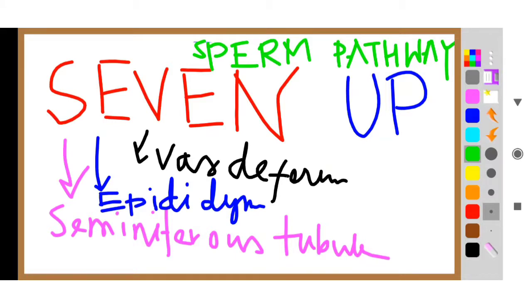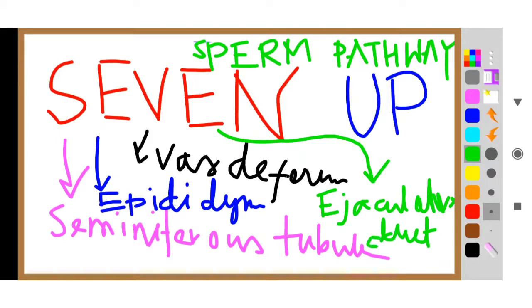E means ejaculatory duct. Ejaculatory duct. Okay, sorry, my pen is not working properly. Ejaculatory duct. So S and N means none. Okay, N means none. N does not specify anything.